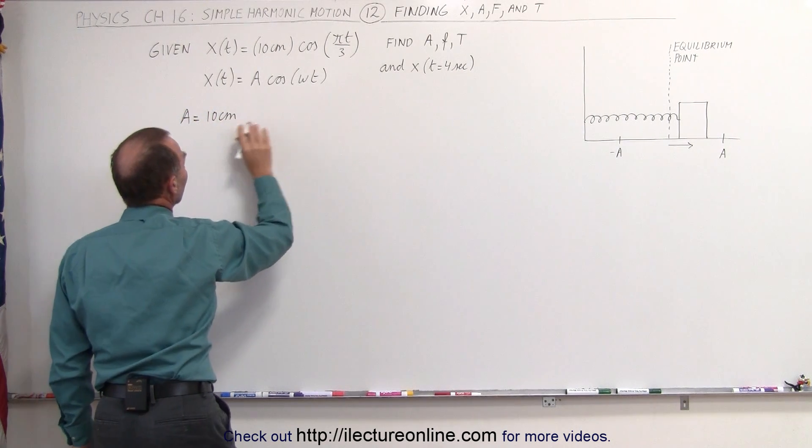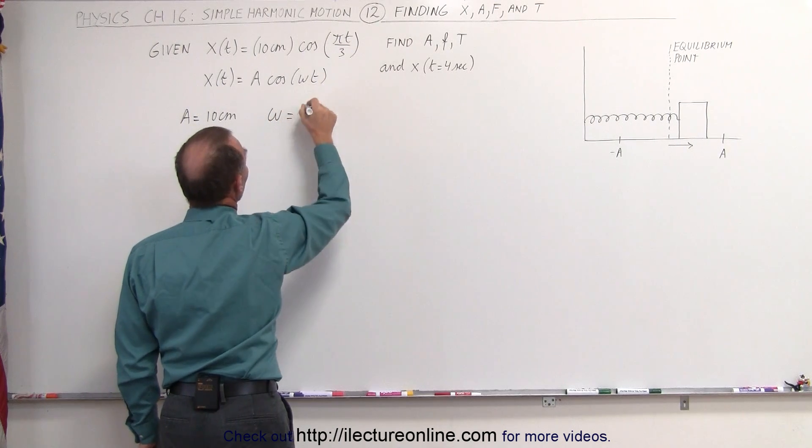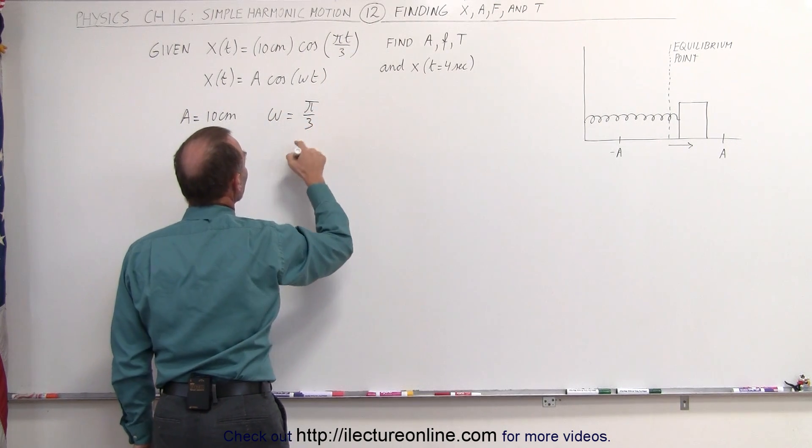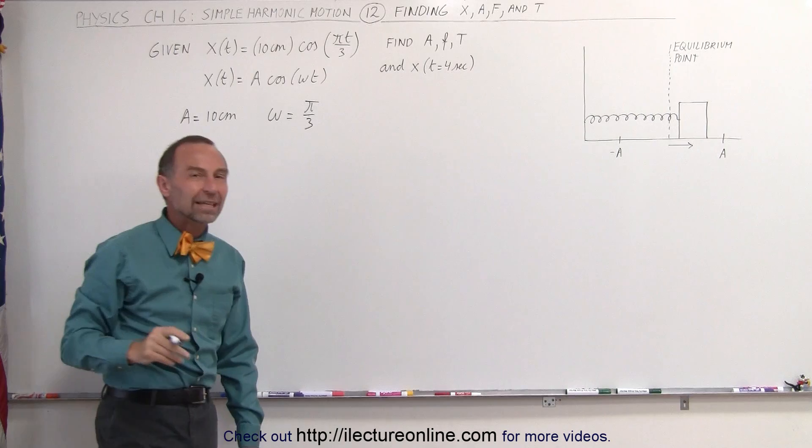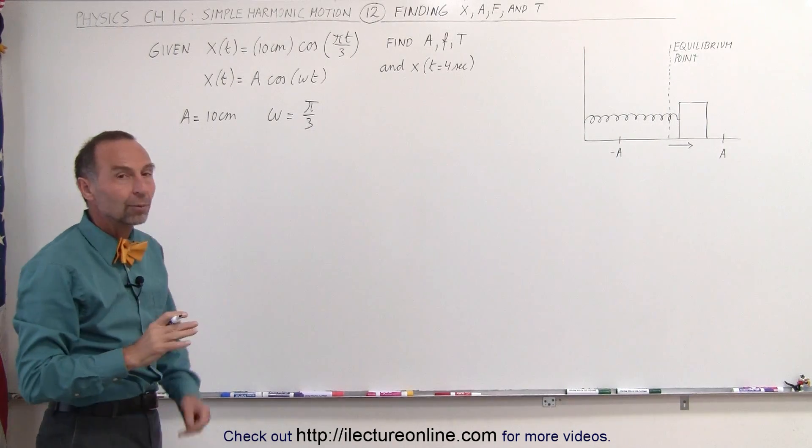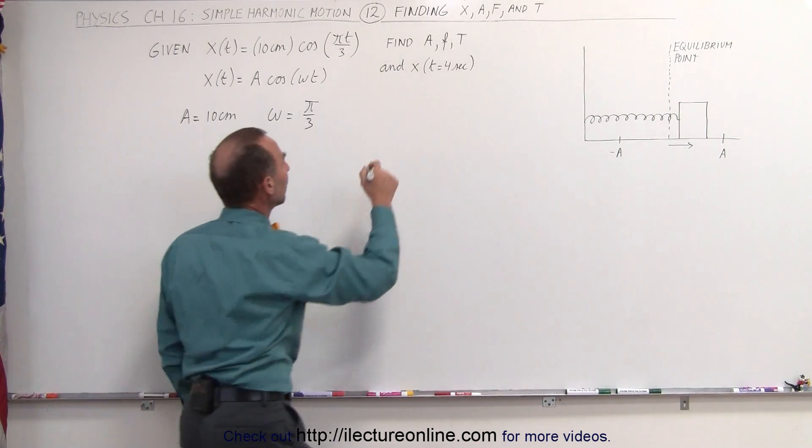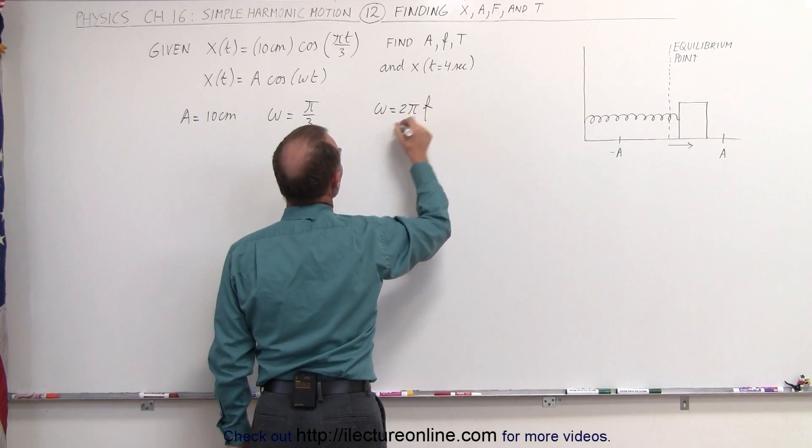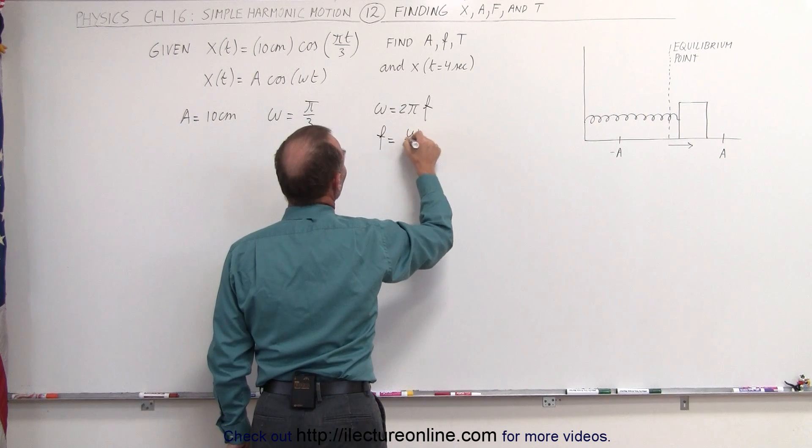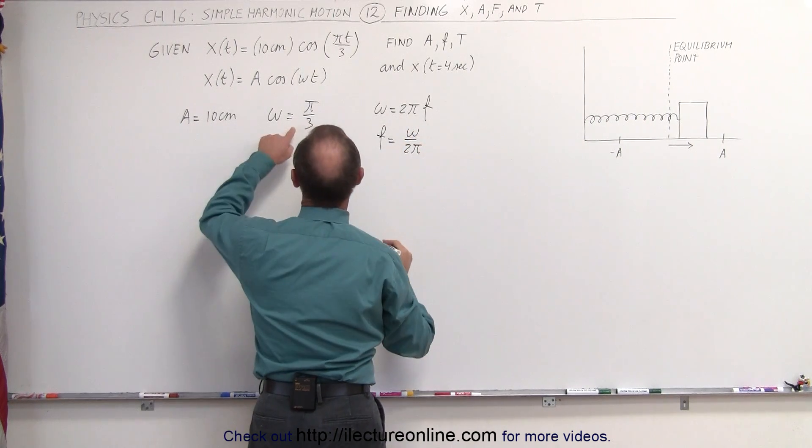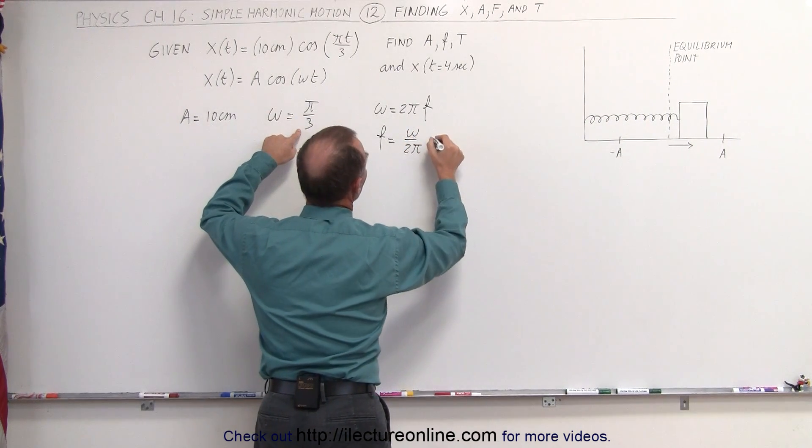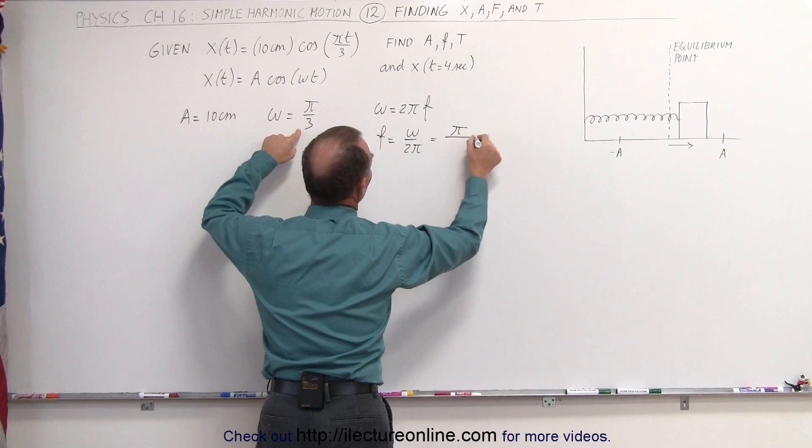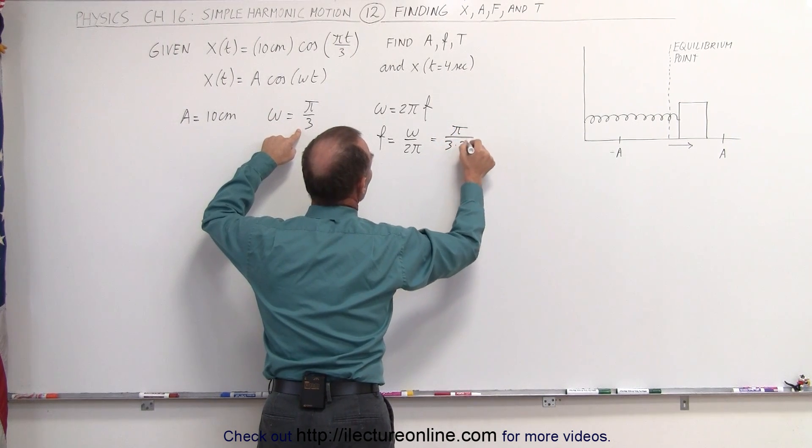Now we can also see that omega is equal to pi divided by 3. Now, of course, omega is the radial frequency, so how do we find the frequency of oscillation? Omega is equal to 2 pi f, which means that f is equal to omega divided by 2 pi. And since omega is equal to pi divided by 3, this is equal to pi divided by 3 divided by 2 pi.